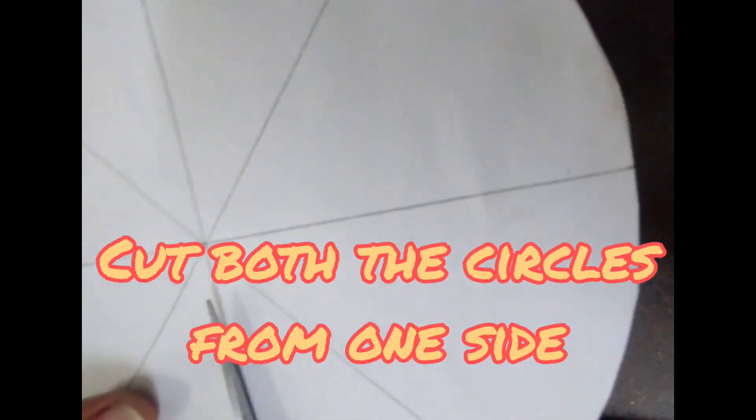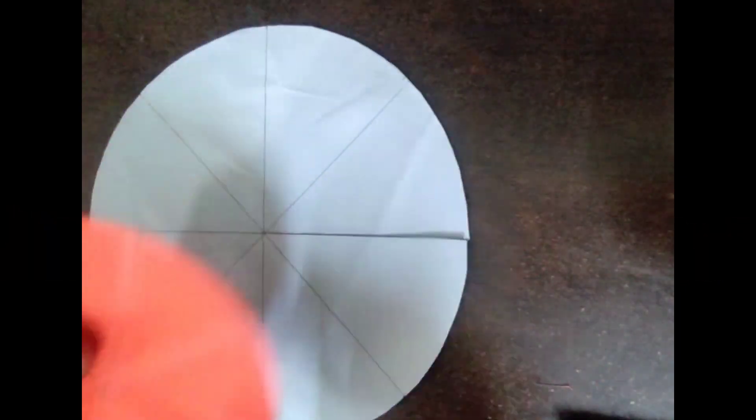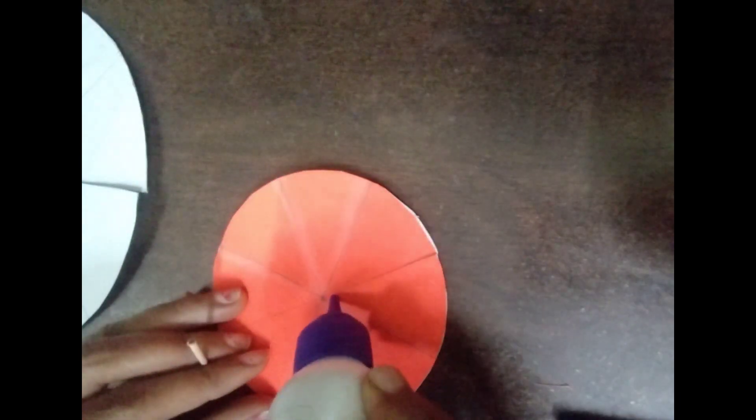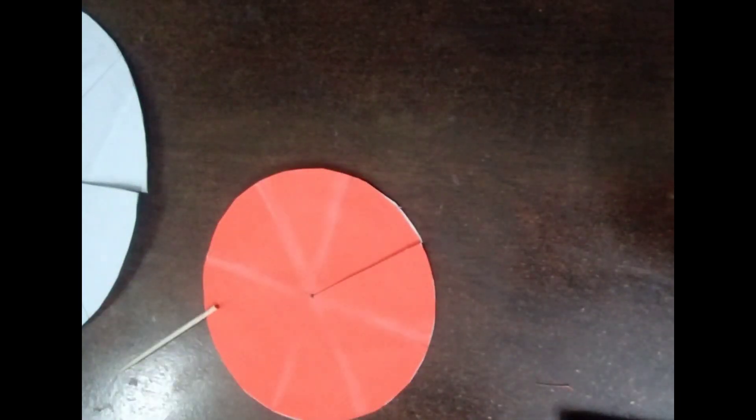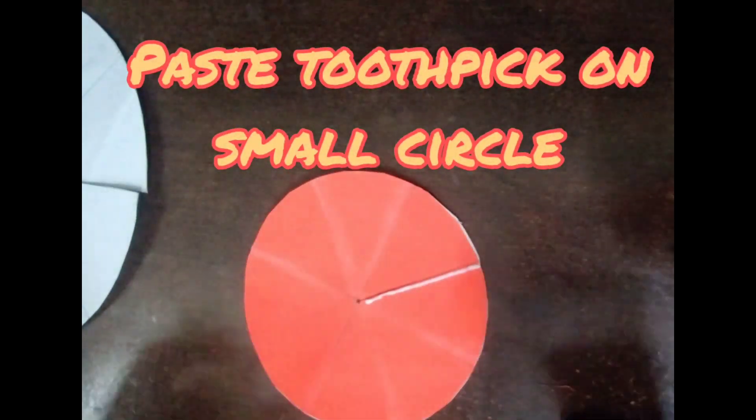Now make a cut on both the circles. Paste toothpick on small circle.